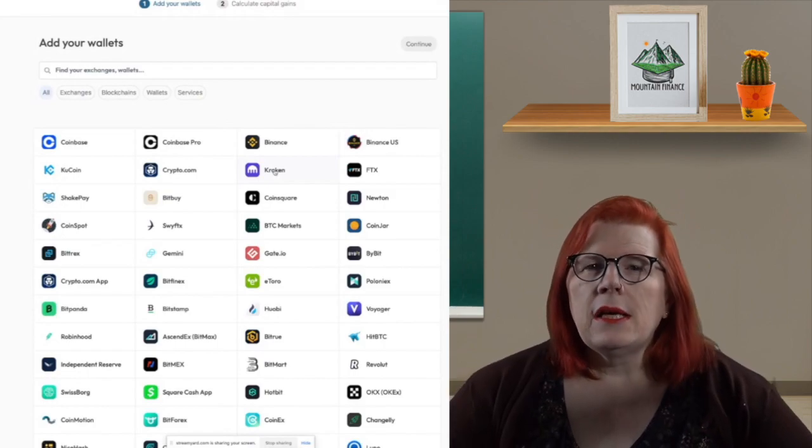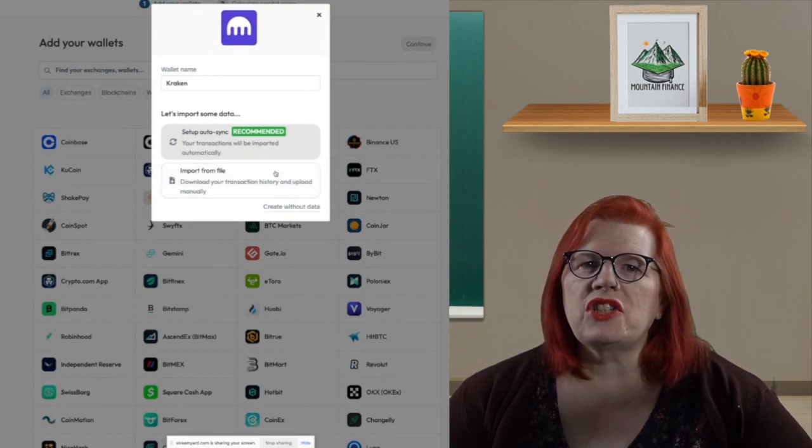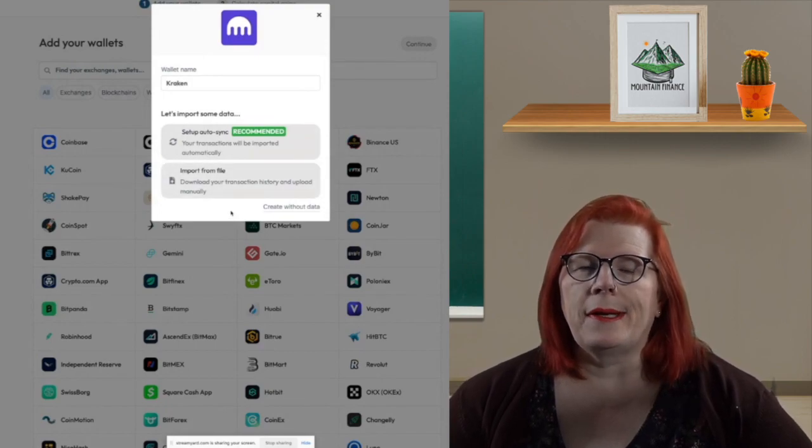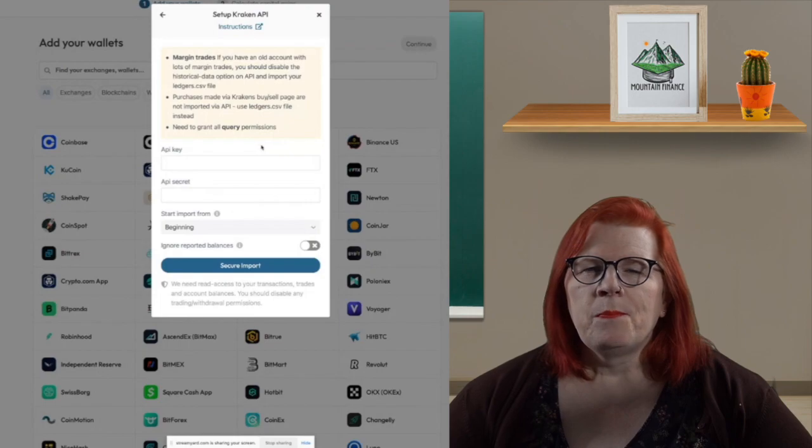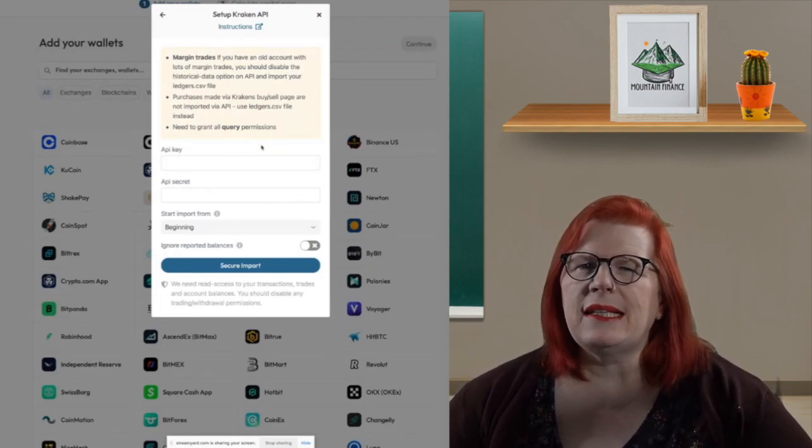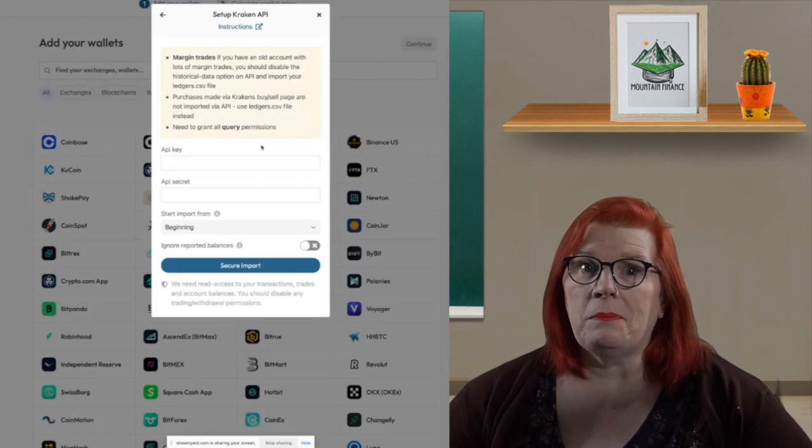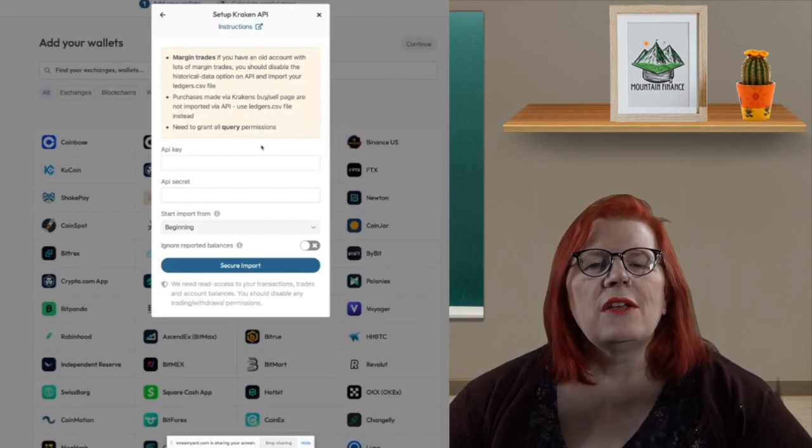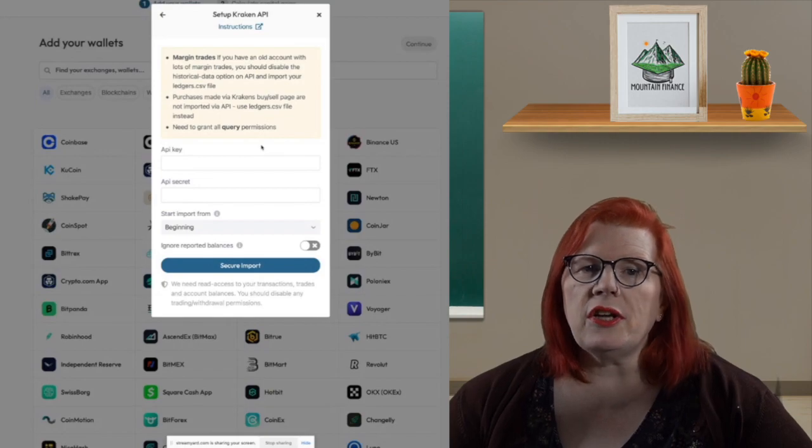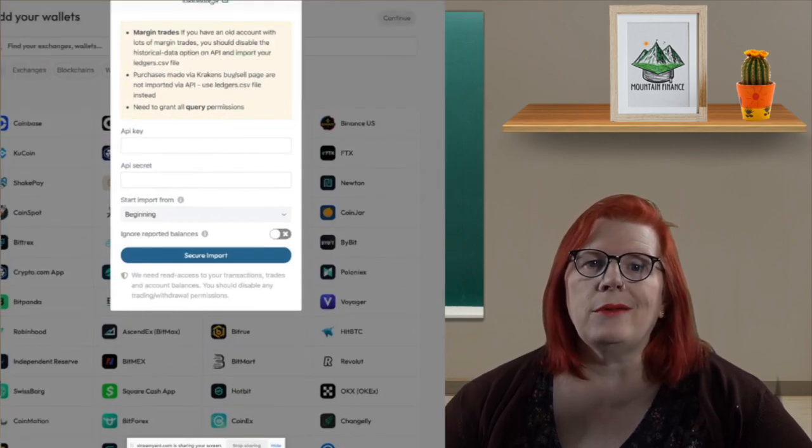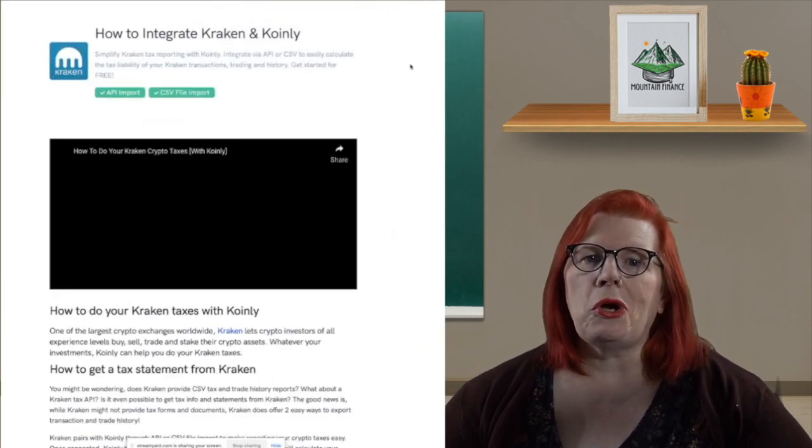For Kraken, it tells me I can set it up with my transactions being automatically imported. That sounds good to me. The next pop-up tells me about the API and secret key I need to get from Kraken to facilitate the import. Of course, if you do not know how to get the API keys, just click on Instructions and it will bring up a great little informational page to show you.